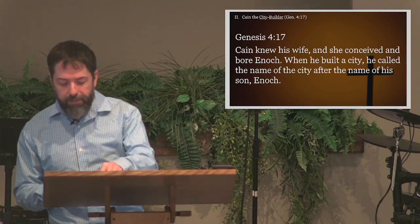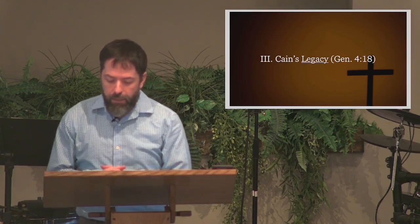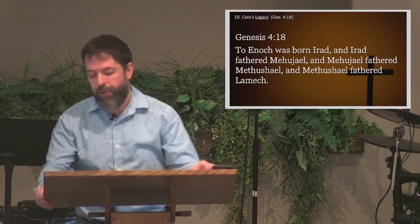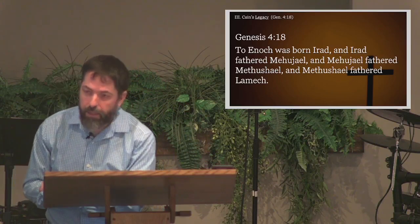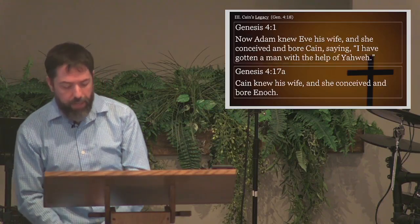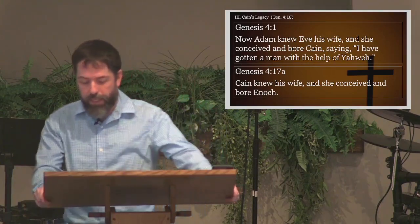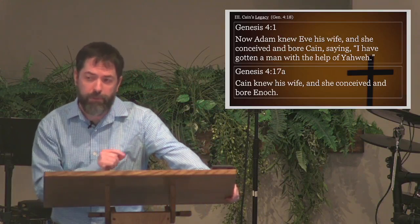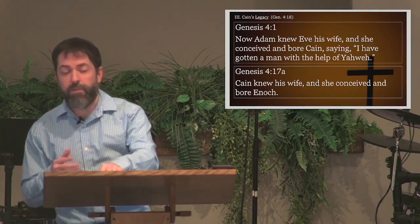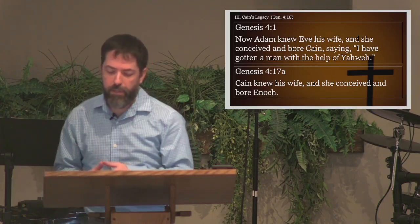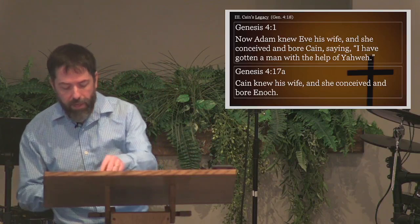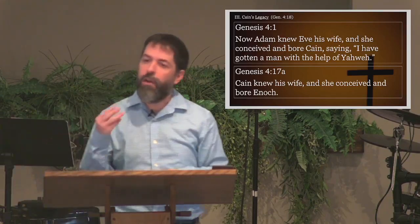In verse 18, we see Cain's legacy—the core of the genealogy. To Enoch was born Irad, and Irad fathered Mahujael, and Mahujael fathered Methushael, and Methushael fathered Lamech. To see the full genealogy, we recall verse 1: Adam knew Eve his wife, and she conceived and bore Cain. Then verse 17 resumes: Cain knew his wife, and she conceived and bore Enoch. Verse 18 provides the rest of the list. When you count the fathers listed, you get a total of seven: Adam, Cain, Enoch, Irad, Mahujael, Methushael, and Lamech. Then, as we'll see momentarily, Lamech branches off with a mention of three sons and one daughter.